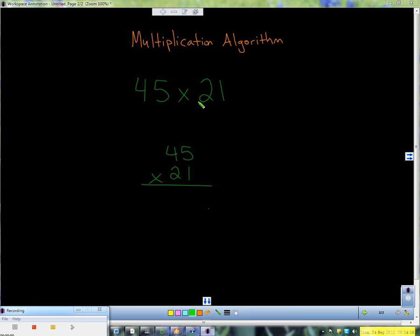And then we're going to multiply that 1 times the number above it first, and then we multiply the 1 times the number to the left and above it. So first we're going to do 1 times 5, which is 5.